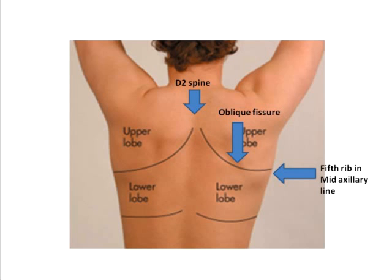Let's first take the right lung which has three lobes. First you need to draw the oblique fissure which starts from the D2 spine. To identify the D2 spine, you count two spinous processes below the most prominent spine when you bend the neck, which is the C7 spinous process. So you will identify D1 and then D2, and you start the right oblique fissure there.